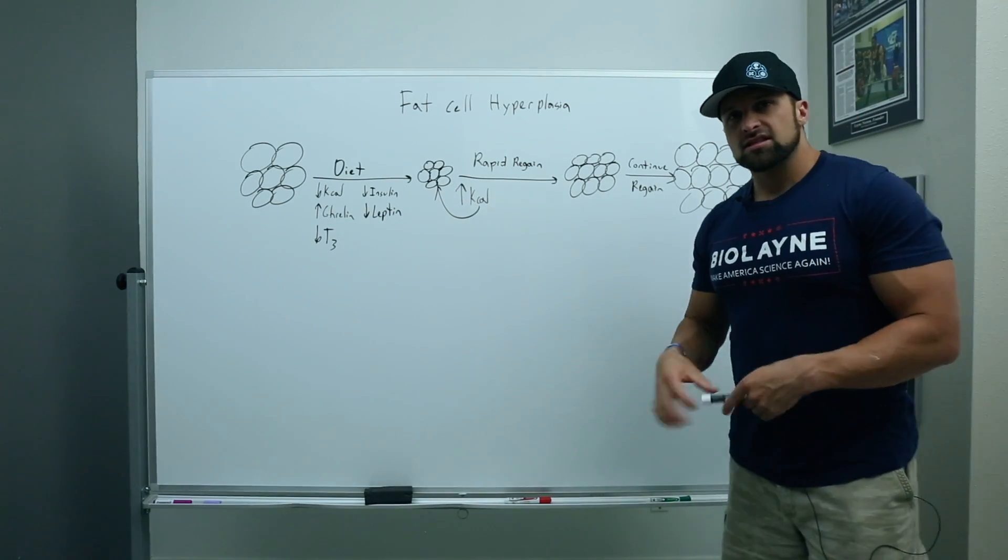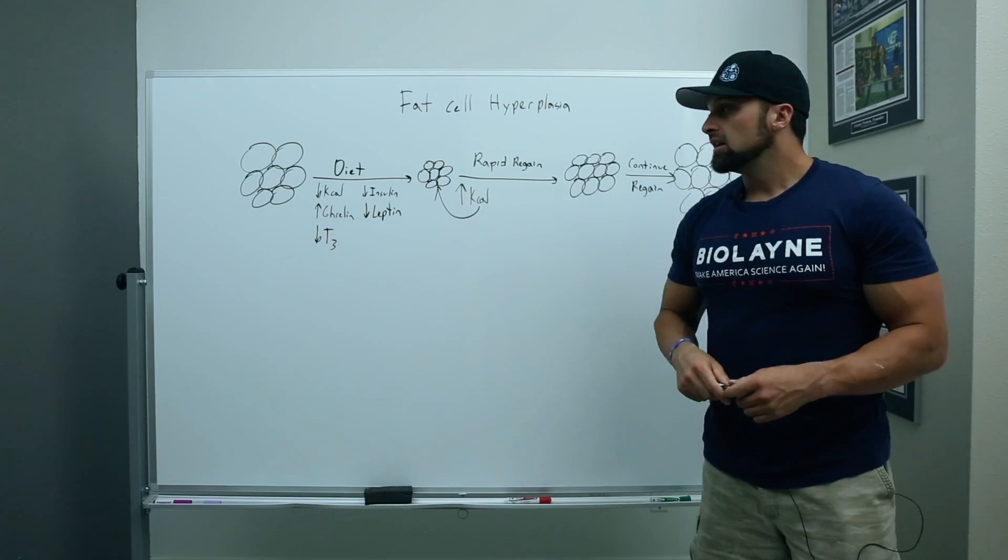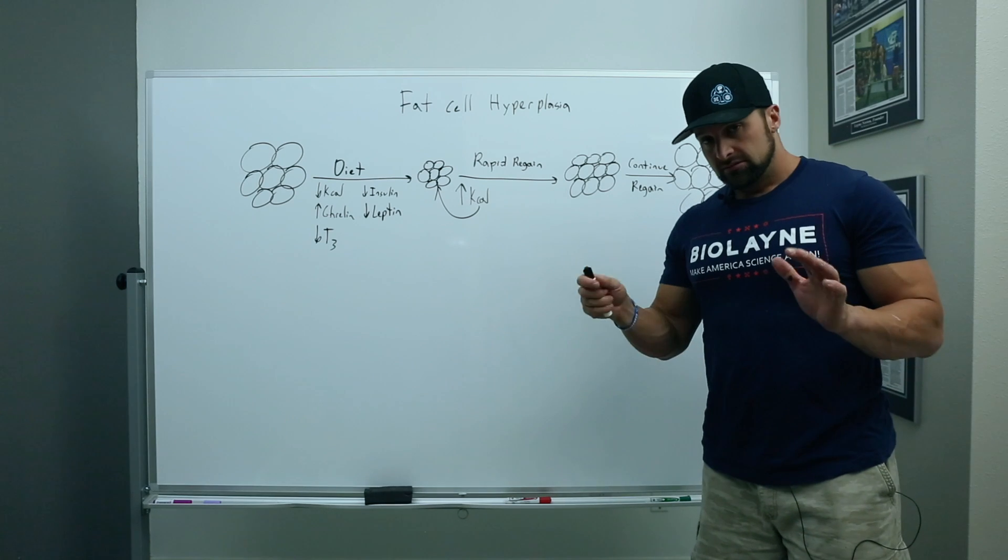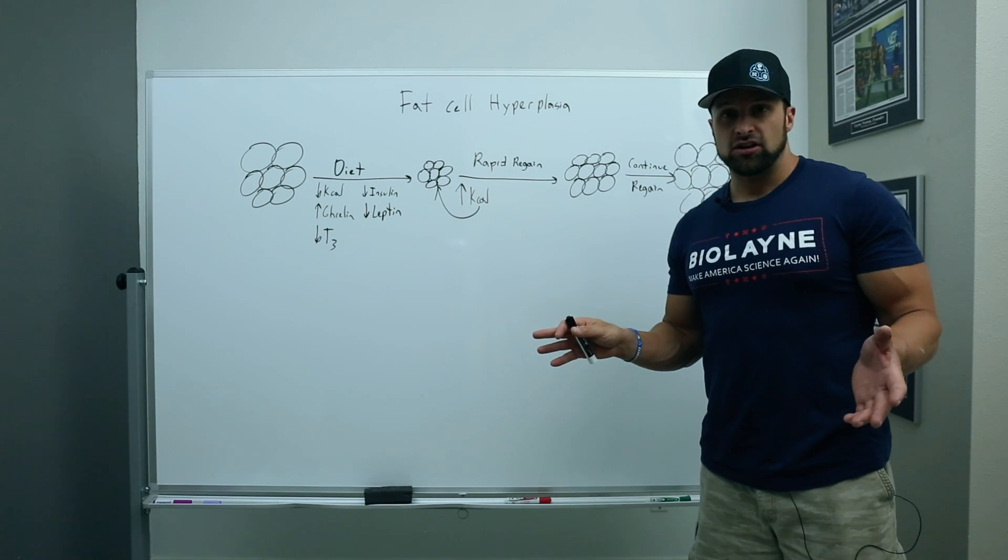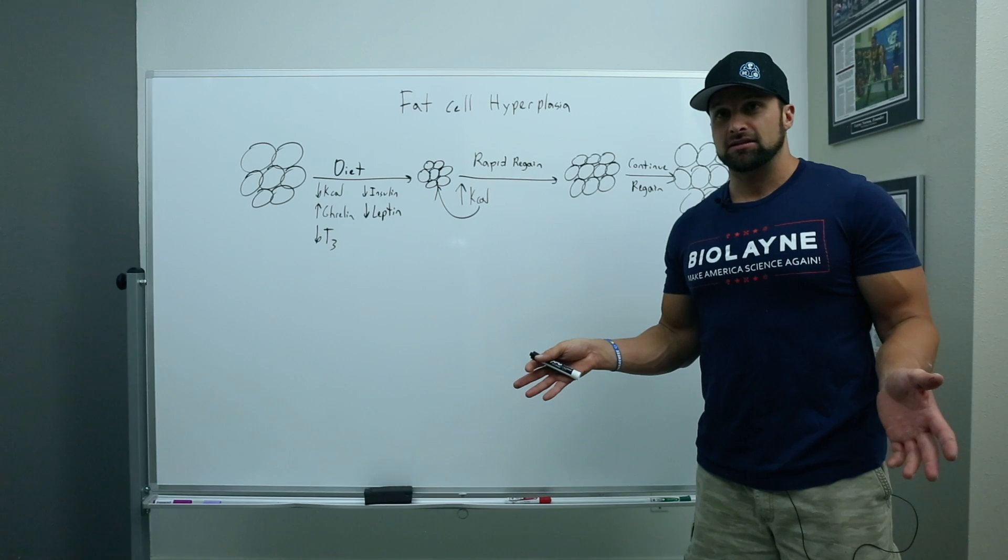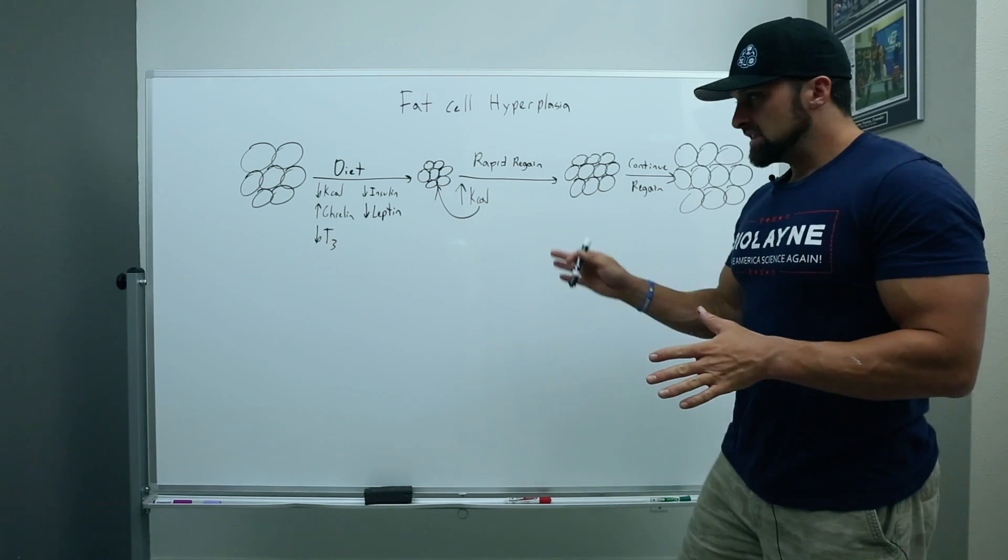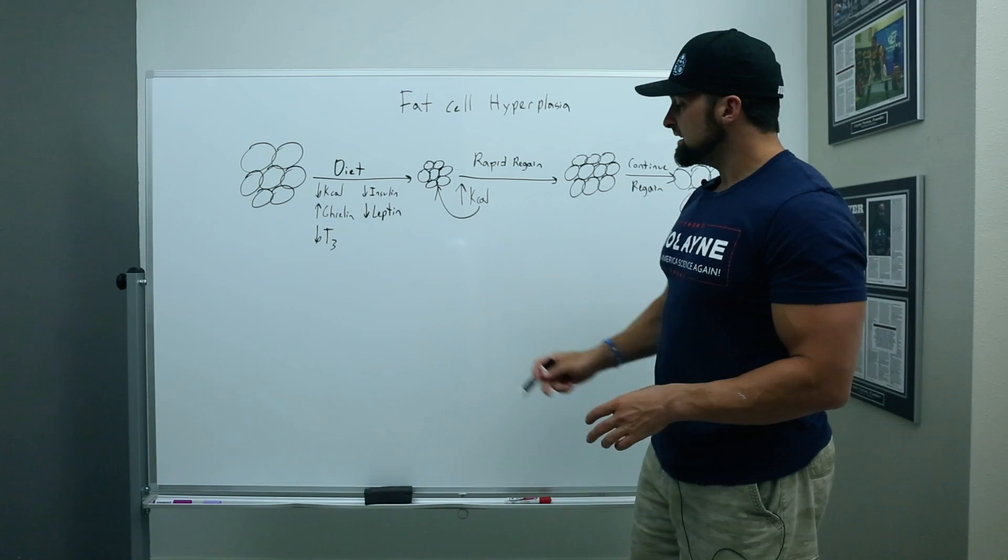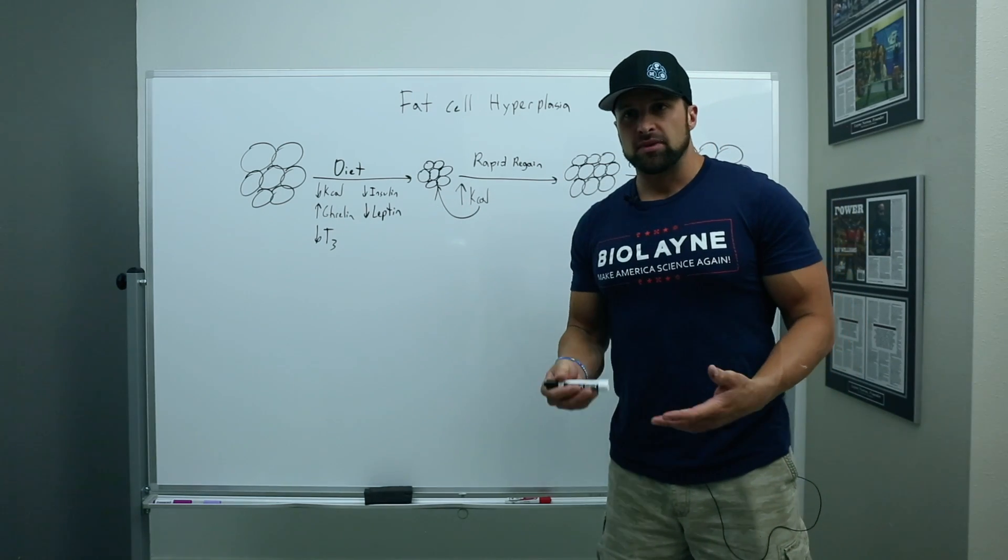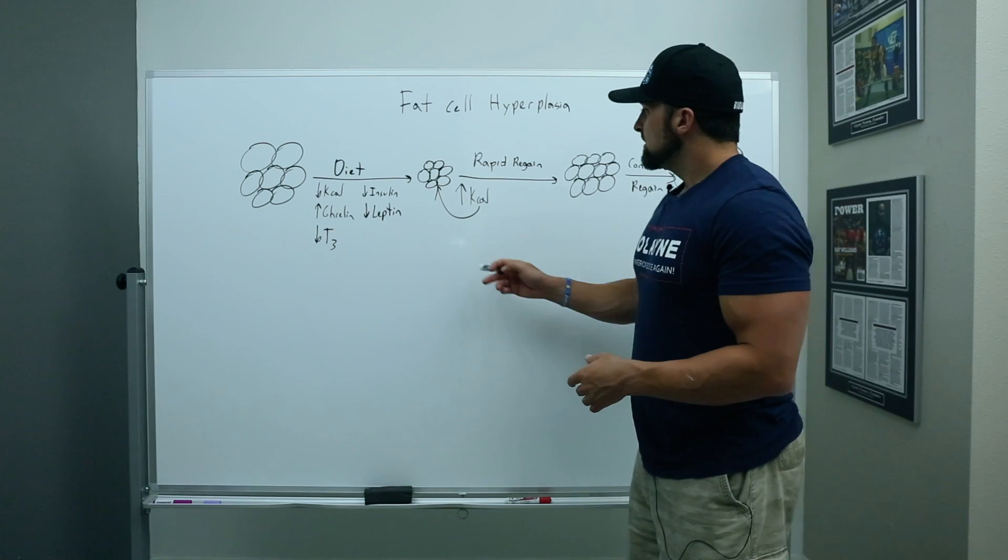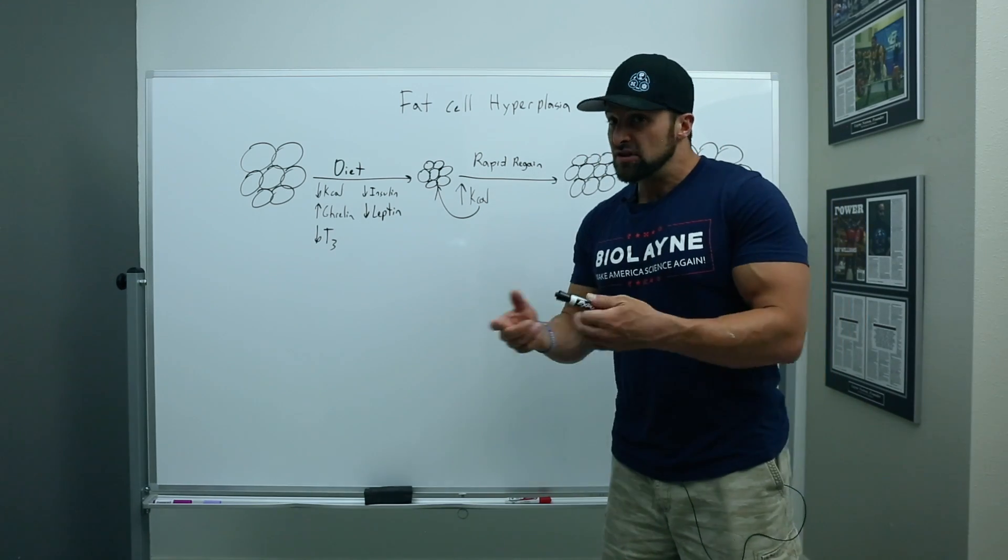All right, so this is the synopsis of a study by a researcher named McLean, and they took rats. Now, again, rats, but there's no way I can think of that you could have done this study on a human, because they had to kill them at the end, and they don't usually like that when you do that with humans. They took them, these rats, and they dieted them down to a relatively low body fat. They lost about 20% of their body weight, and then they basically gave them as much food as they wanted.